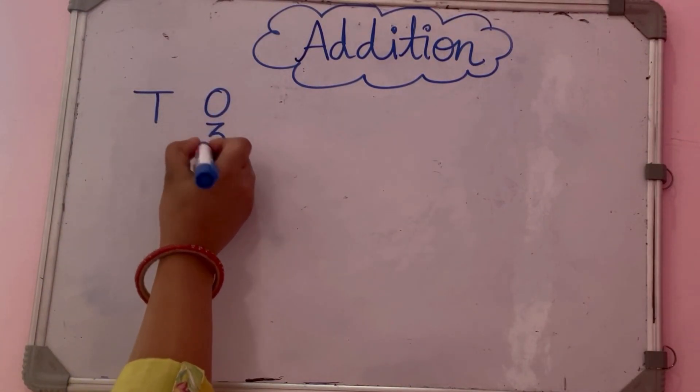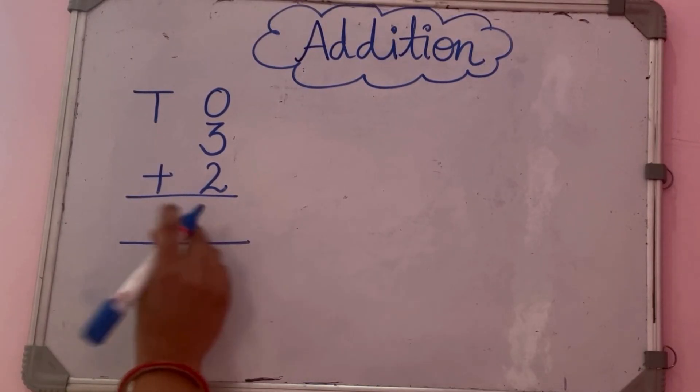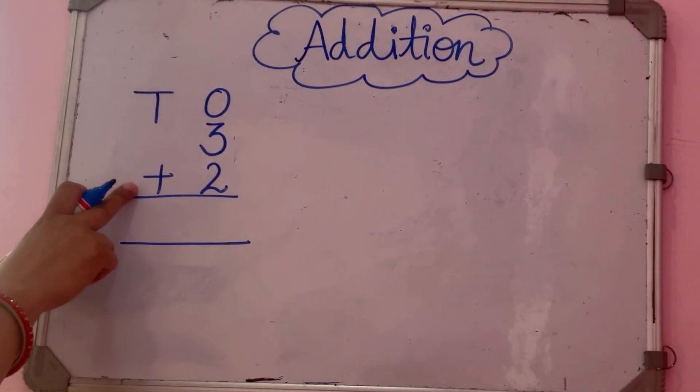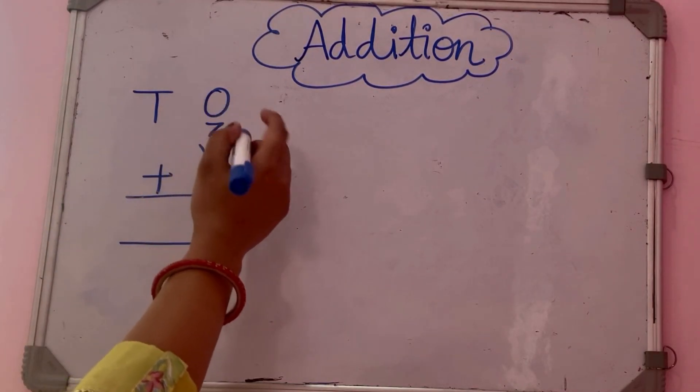First, there are two numbers: 3 plus 2. This is the sign of addition, this is called plus. Now we start adding these numbers.